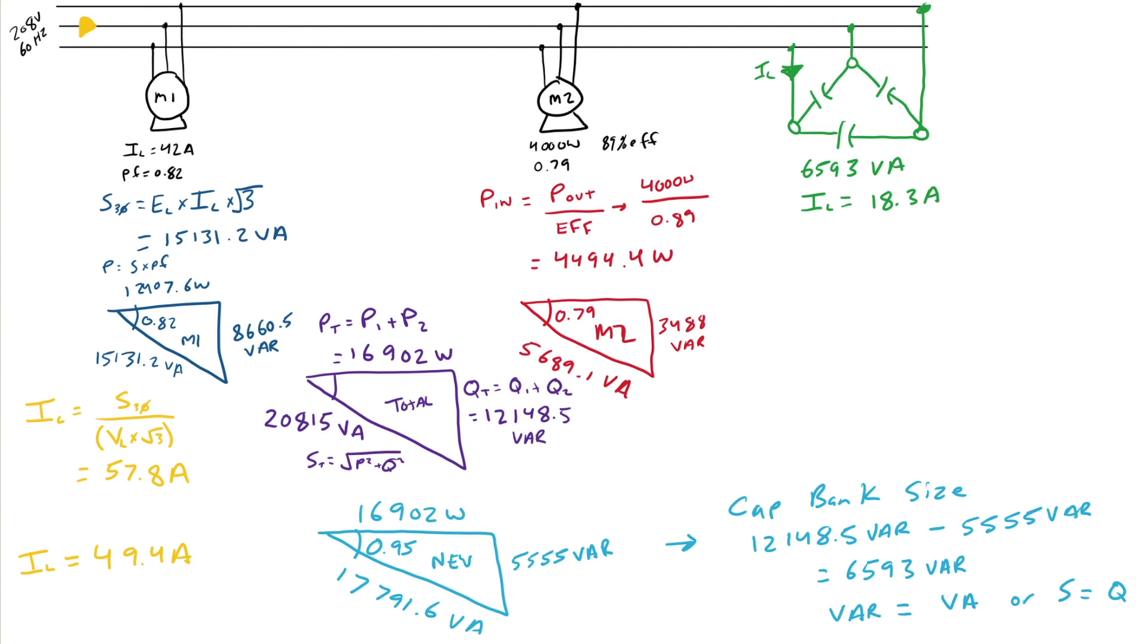Now, now we really need to think about how they are connected. Because they are connected in delta, I also am going to have a phase current, which we know has a root 3 relationship with my line current, and it needs to be smaller. So, I have 10.57 amps. So I got this by going, I phase equals I line divided by root 3. Get 10.57 amps.